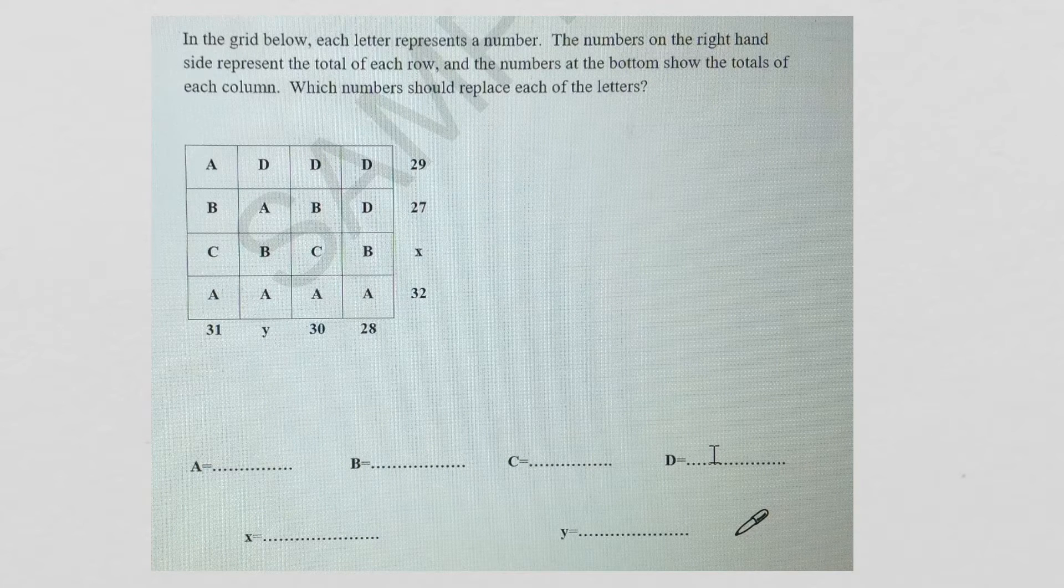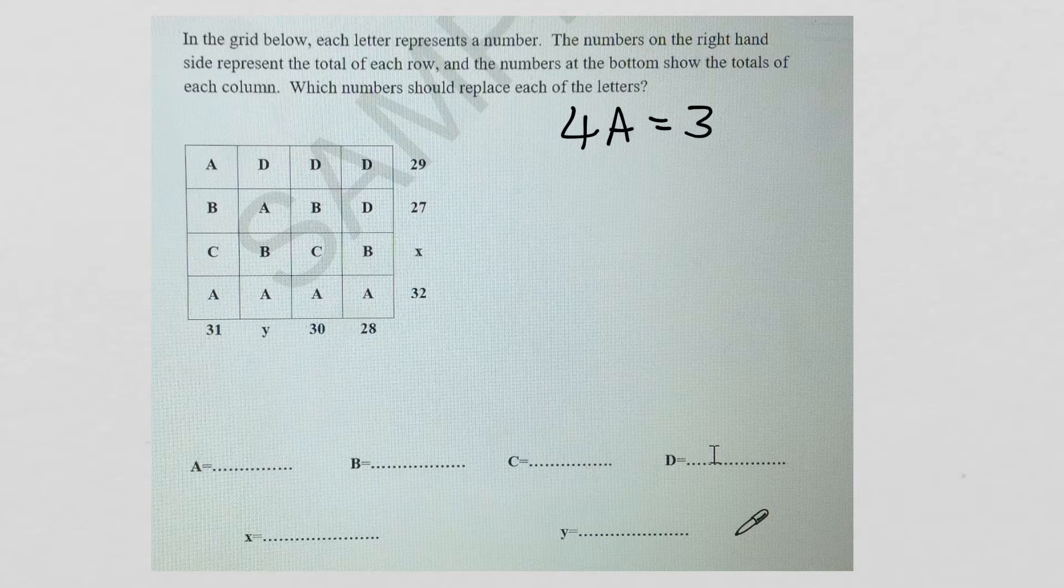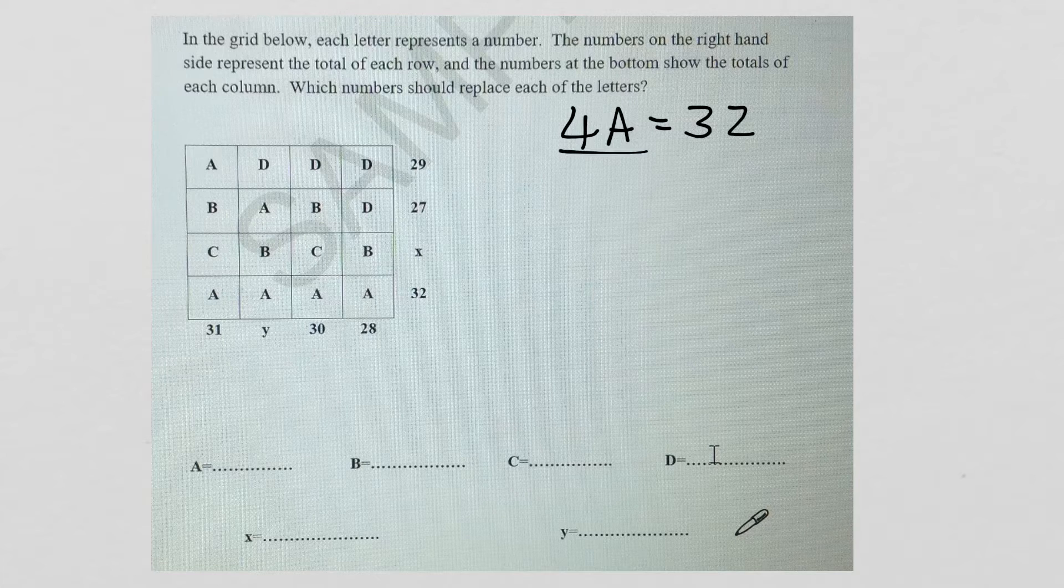Our first problem consists of a series of letters and numbers, and we need to find out what a, b, c and d all equal. First thing I want to do is find a column where there's just one letter. Yes it does. So I know that four of those a's equals 32. So in that case, one a has to equal 8.